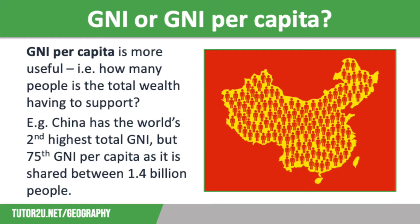However, the 2023 rankings for GNI per capita look quite different. Bermuda is in first place with a figure of US$134,000, although it is only ranked 153rd for total GNI. This is followed by Norway, then Switzerland, then Luxembourg, then Ireland.